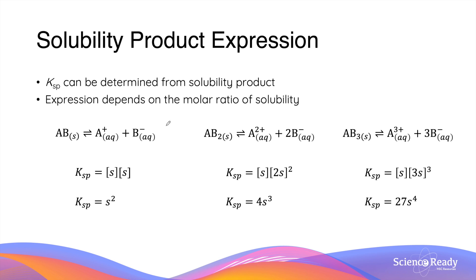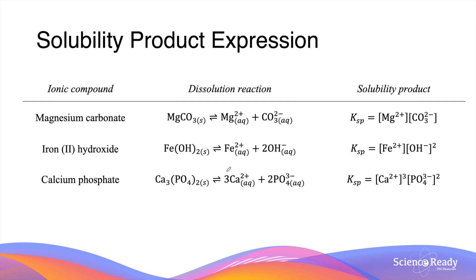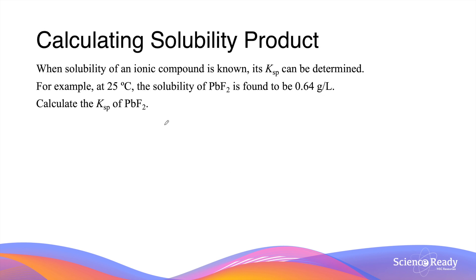Here are three examples you may come across. If the ions are both in a 1 to 1 ratio with the ionic compound itself, then Ksp will equal S squared. If the ratio is 1 to 1 for one ion but 1 to 2 for the other, the expression will be Ksp equals 4S cubed. If the ratio is 1 to 1 and 1 to 3 for the two ions respectively, the expression becomes 27S to the power of 4. Here are some more examples using specific ionic compounds.